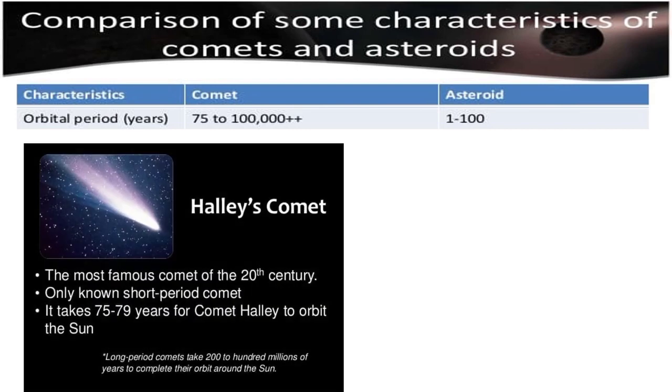Comets have an orbital period of 75 to 100,000 plus years. Halley's Comet is the most famous comet of the 20th century. Halley's Comet is an example of a short-period comet which only takes 75 to 79 years to orbit the Sun.